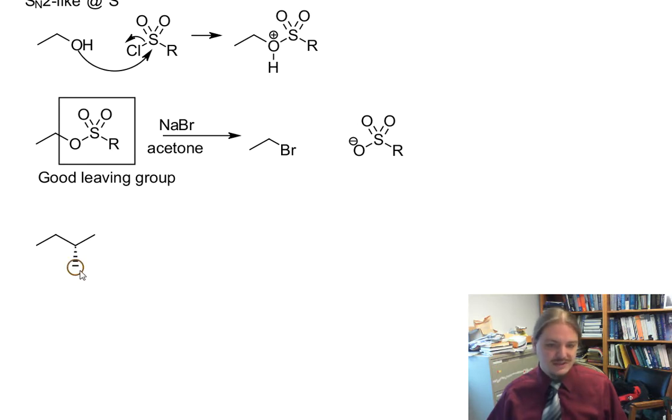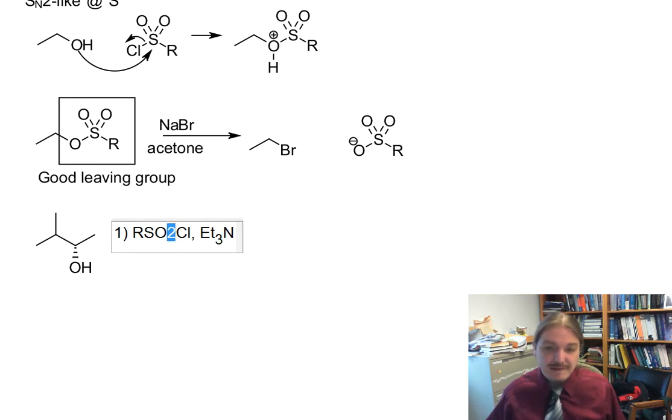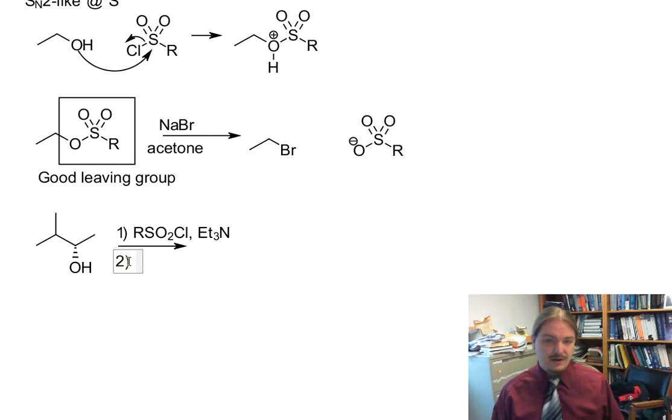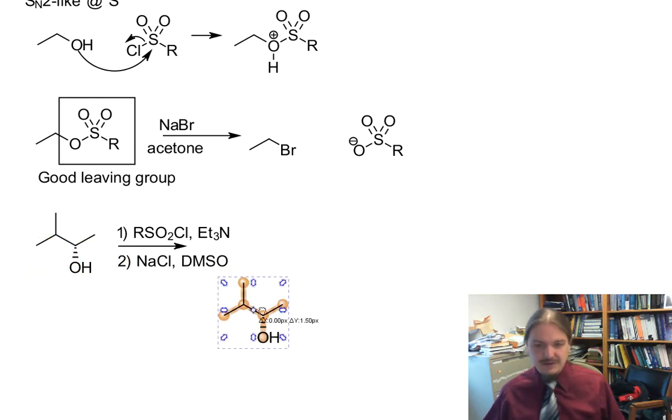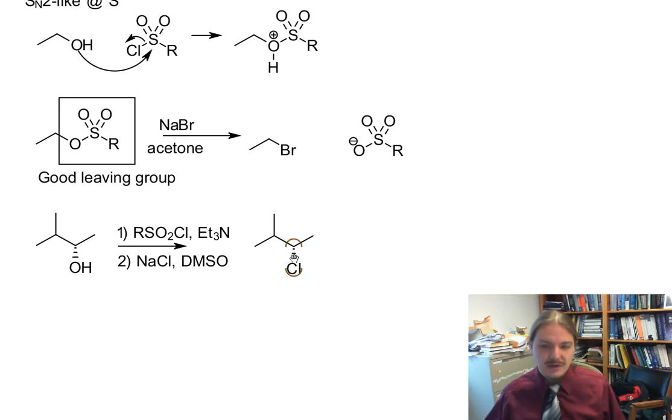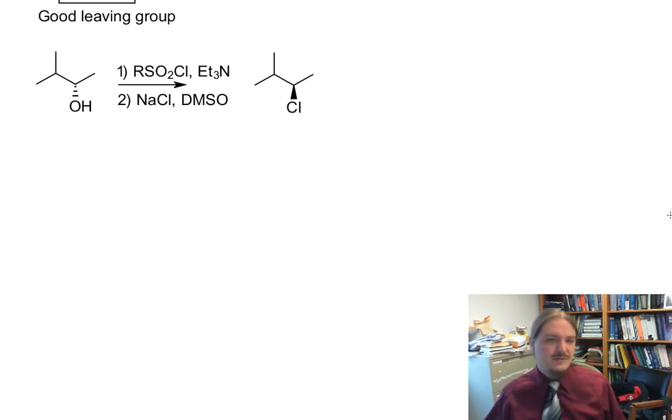One more example on a secondary substrate. 3-methyl-2-butanol, we have a chirality center here. We put on RSO2Cl and triethylamine, then follow that up with sodium chloride. My focus here is on the conversion to halides, but honestly any nucleophile that is capable of functioning in an SN2 reaction will behave itself here. Because we're doing SN2-like conditions, we get inversion of stereochemistry and we avoid rearrangements.